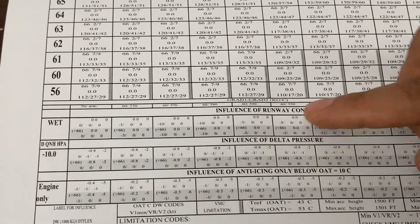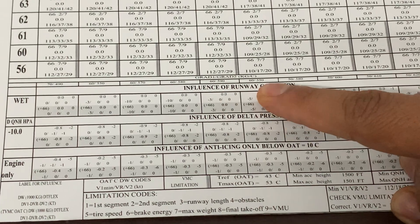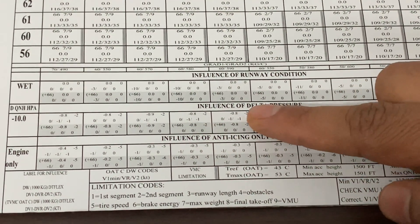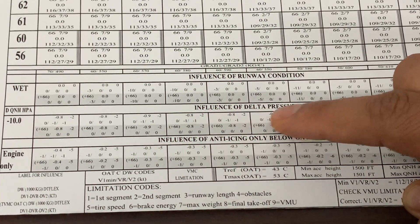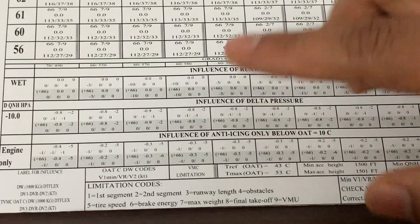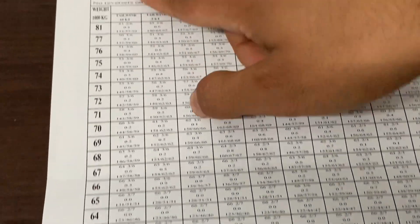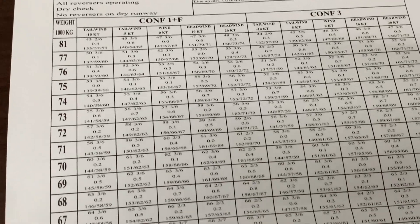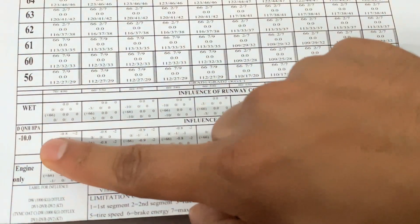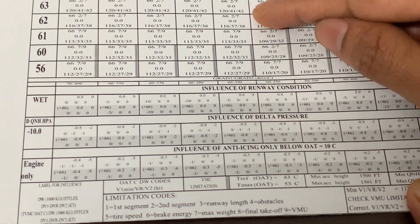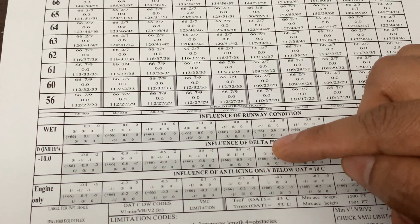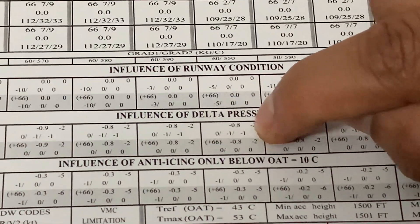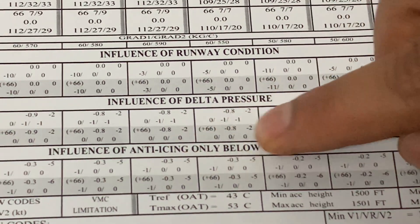Below the line are corrections for influential parameters. One is runway condition: if wet, these corrections apply. Another is delta QNH — change in QNH. This chart was computed with QNH at 1013.25 hPa. If on the day of calculation the QNH is different, you need to apply the QNH correction from the corrections given here, choosing the applicable column and box.